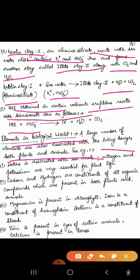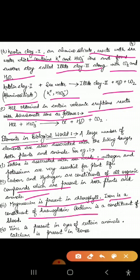Iodine is present in seaweeds. Nitrogen and potassium are essential for plant life. Carbon and hydrogen are important constituents of organic compounds and are present in the bodies of both plants and animals. Magnesium is an important constituent of chlorophyll. Iron is an important constituent of hemoglobin. Sodium is an important constituent of blood. Zinc is present in the eyes of certain animals. Calcium is present in bones. Traces of copper and magnesium are associated with chloroplasts.